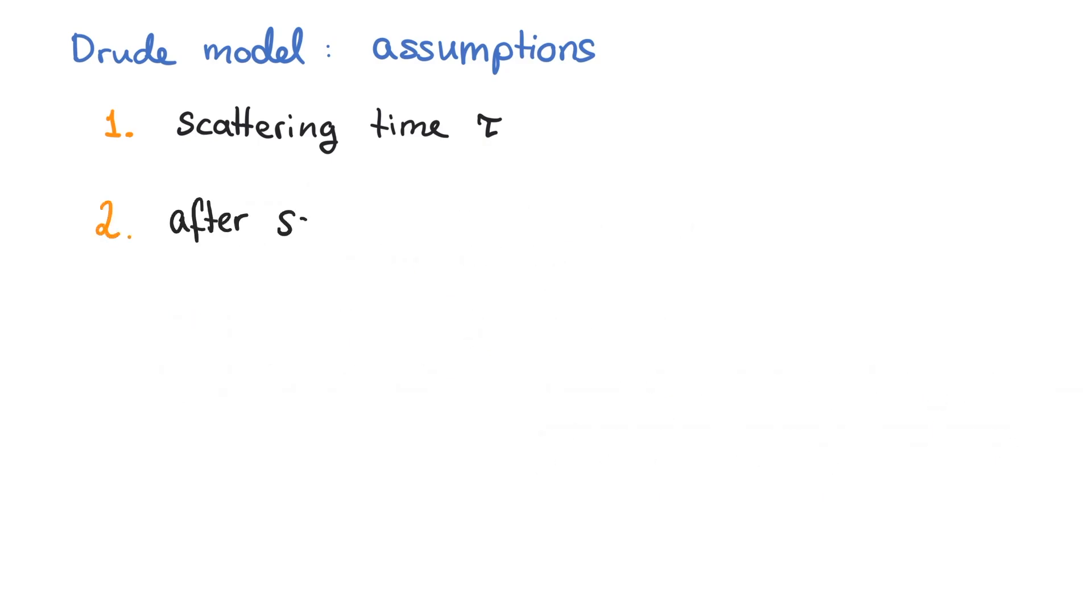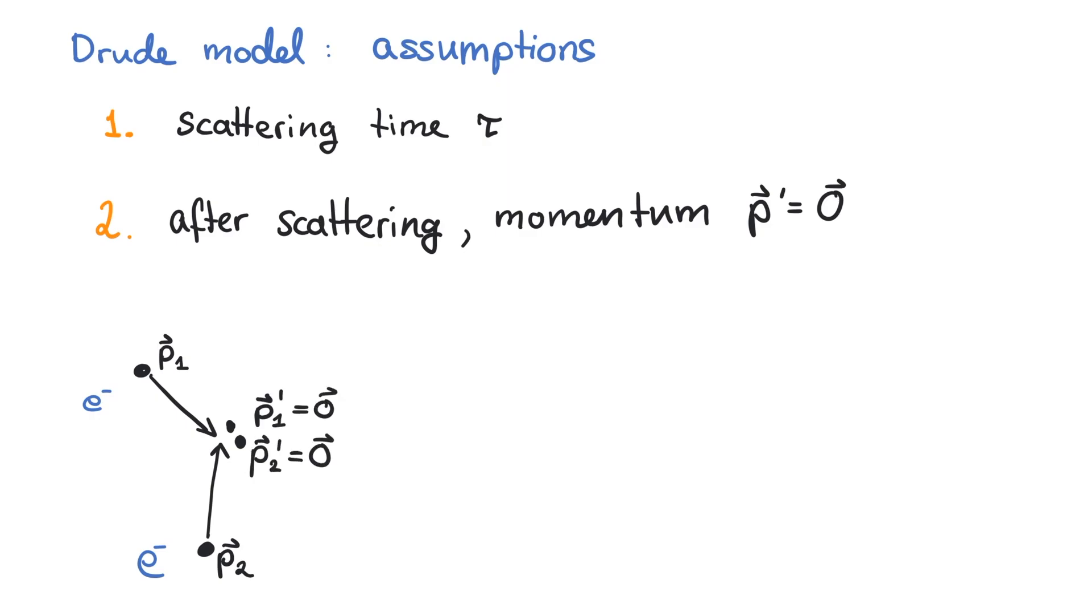Secondly, once the electron scatters, it returns to zero momentum. That is, as soon as an electron bumps into anything else, it fully stops moving. In reality, it would go off in some direction with a final momentum depending on its scattering partner due to momentum conservation.